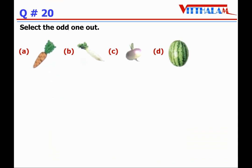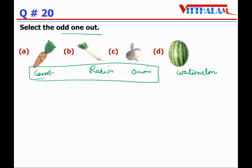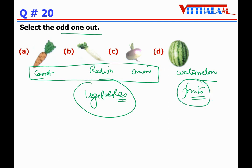Next, Question 20: select the odd one out. Here there are four pictures — carrot, radish, onion, and watermelon. We need to find the odd one out. The first three — carrot, radish, and onion — they are vegetables. Watermelon also grows in the ground through farming, but it is a fruit. All three others are vegetables, this one is fruit. Therefore, the odd one out is B — watermelon.